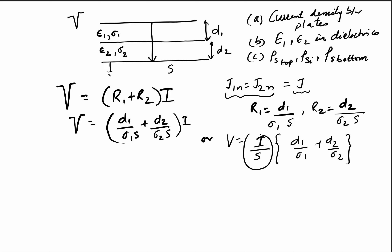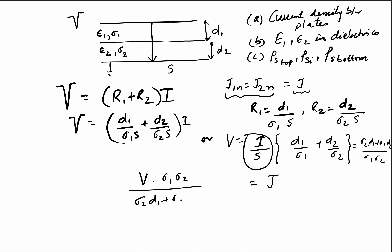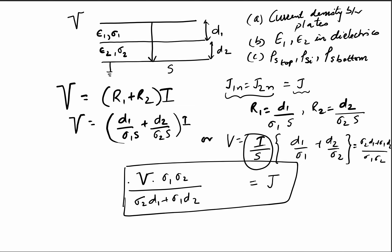Since I/S is simply the current density J, we need to solve for it. On rearranging, J = V × σ₁σ₂ / (σ₂d₁ + σ₁d₂). In this way, we have found the current density in both dielectrics. Since the current density is in the same direction and its normal component is continuous, this single value applies in both dielectrics.